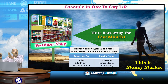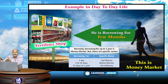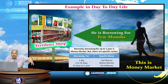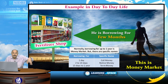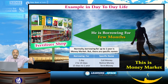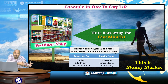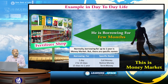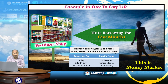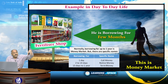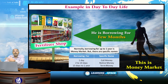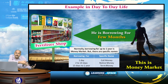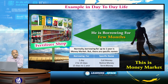Another example: a farmer wants fertilizers and seeds, so he will borrow money for a few months. He will pay back within three or four months after harvesting. That borrowing for a few months is an example of the money market. Please don't forget, call money is also part of the money market.